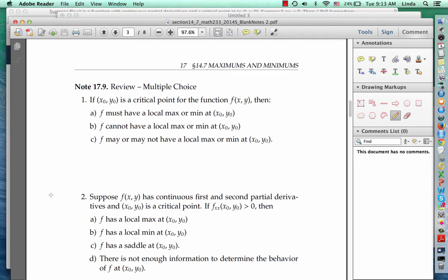For the first question, you should have answered that if x naught y naught is a critical point, f may or may not have a local max or min. Just like in calc 1, being a critical point does not guarantee you're a local max or min. Instead, the critical points are just the candidates for a local max and mins. Those are the points you need to check when you're looking for a max or min.